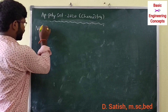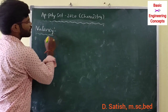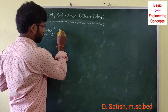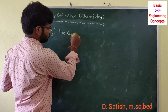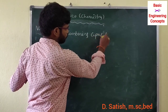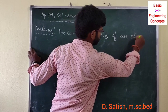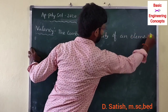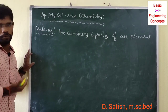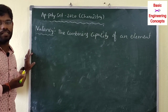Valency means the combining capacity of an element is called valency. For example, Group 1 elements have valency one, and Group 2 elements have valency two.